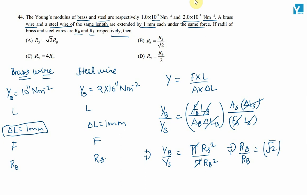Actually there is one mistake, this will not be root 2, this will be 1 by root 2. On substituting the value of Yb and Ys, we will get the ratio to be 1 by root 2. So, Rs will be Rb by root 2. As per options, option B is the right answer.